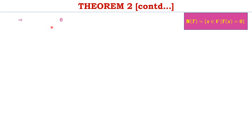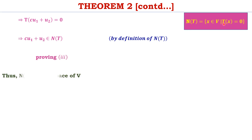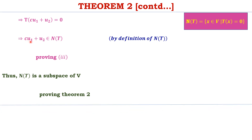So T of CU1 plus U2 equals C times 0 plus 0, which equals 0. Since CU1 plus U2 satisfies T of X equal to 0, it is an element of N(T). Thus for C in F and U1, U2 in N(T), CU1 plus U2 also belongs to N(T). All three conditions being proved, we conclude that N(T) is not just a subset but a subspace of V, proving Theorem 2. In this video, we have given the definitions of range and null space and proved two basic theorems relating to them.